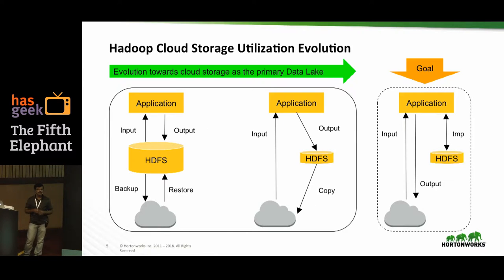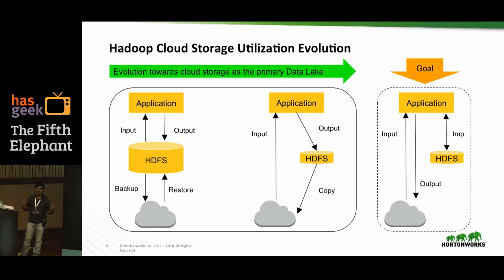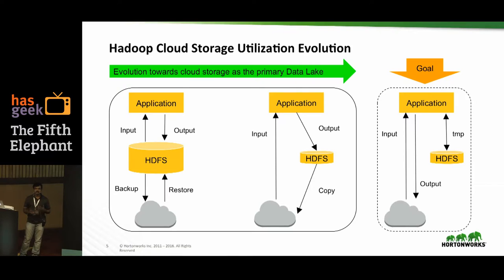The last pattern represents the end goal: data is read directly from cloud storage by applications, processed, and written directly back to cloud storage. However, HDFS is retained as a storage medium for intermediate data. For example, in a large ETL pipeline with 10 intermediate stages, you don't want to store intermediate data repeatedly in cloud storage due to performance characteristics. In those cases, store intermediate data on HDFS and only store the final output on cloud storage.